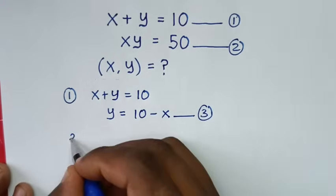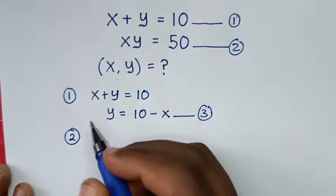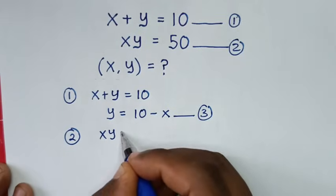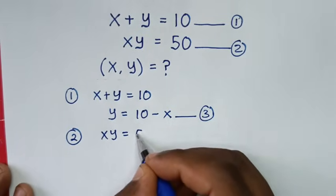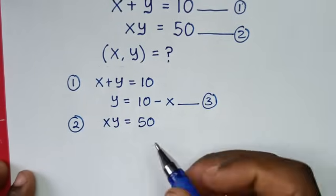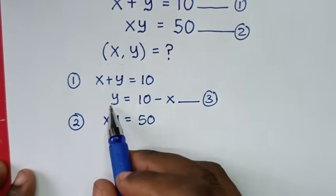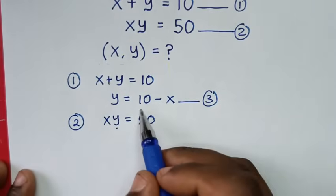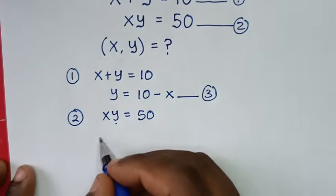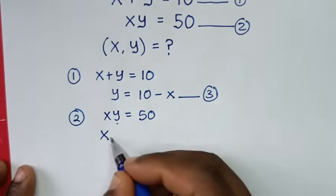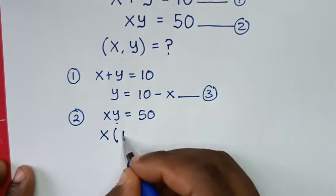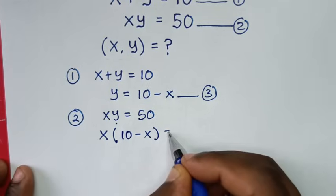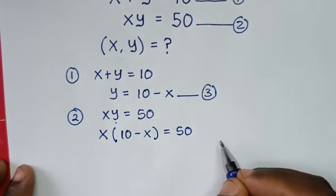Then from equation 2, which is x times y is equal to 50, we substitute equation 3 in terms of y here, where y is 10 minus x. So it will be x times (10 minus x) is equal to 50.